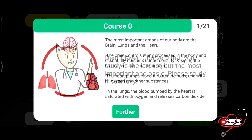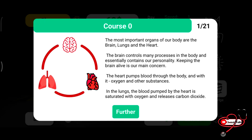Course number zero: the most important organs in our body are the brain, heart, and lungs. The brain controls many processes in the body and essentially contains our personalities. Keeping the brain alive is our main concern. The heart pumps blood throughout the body with its oxygen and other substances. And last, the lungs.